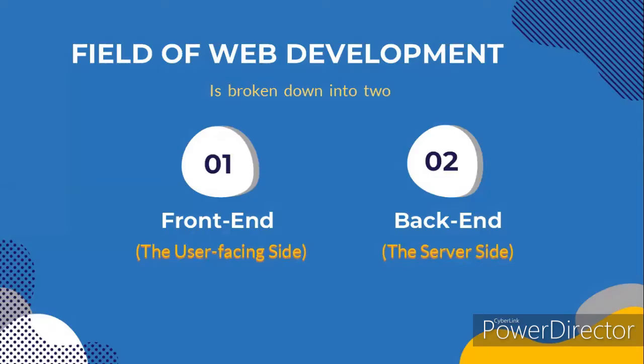The field of web development is generally broken down into two parts. We have the front-end web development, which is known as the user-facing side. Then we have the back-end, which is the server side.